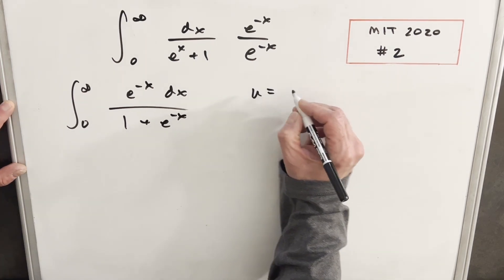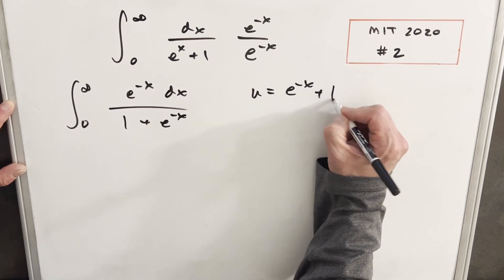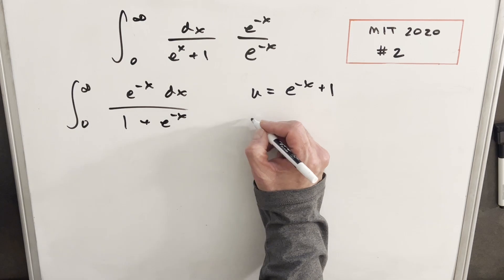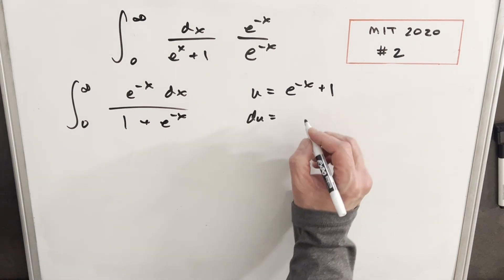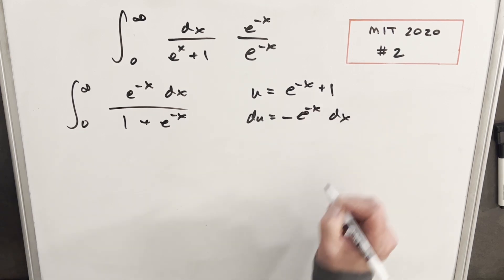I'll make the u, I'll make u my whole denominator. So we'll say u equals e to the minus x plus one. Then we'll take our derivative and we're going to have our du is going to be e to the minus x, but don't forget to bring a minus out front, dx.